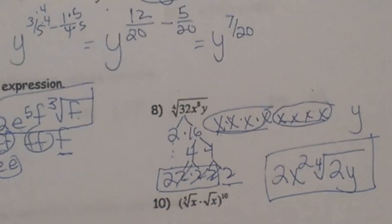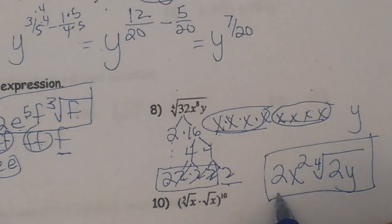And there you go. That is how you write the final answer: 2 x squared, fourth root of 2y. Hope this video was helpful.